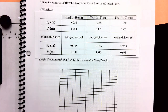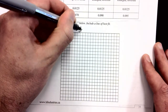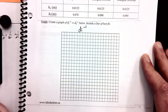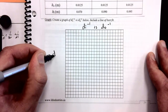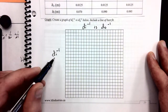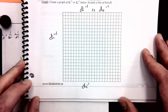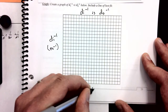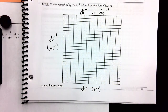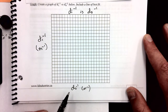Here's what our graph is going to look like. We're going to make a graph of distance of the image di to the power of negative 1 versus distance to the object do to the power of negative 1. That means di to the negative 1 has to be on the y-axis and do to the negative 1 has to be on the x-axis. The units will be meters to the negative 1 for both axes, or centimeters to the negative 1 if you're using centimeters.